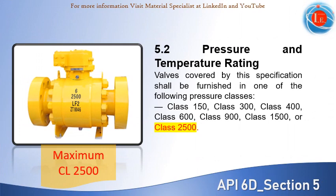Pressure rating designation is the word 'class' followed by a dimensionless number, which is the designation for pressure-temperature ratings. Valves covered by API 6D specifications shall be furnished in one of the specified pressure classes; however, it is not applicable to valves having pressure ratings exceeding class 2500.